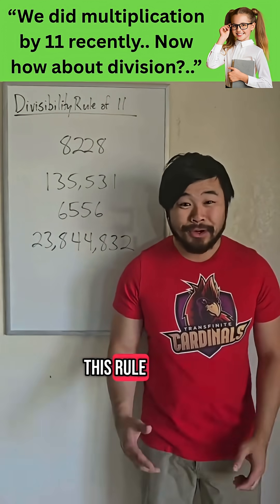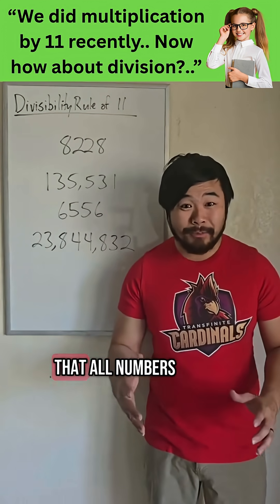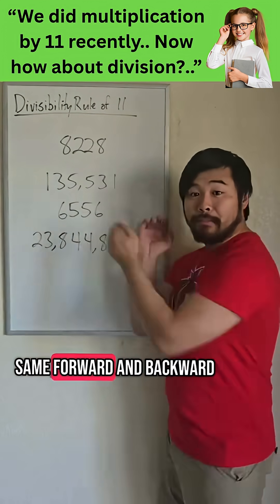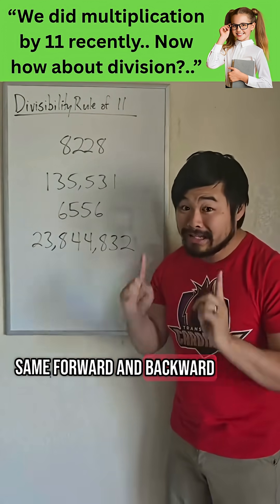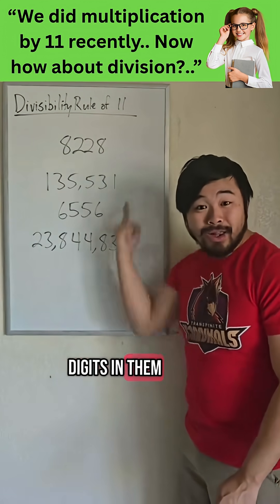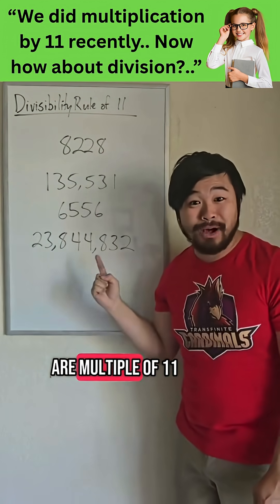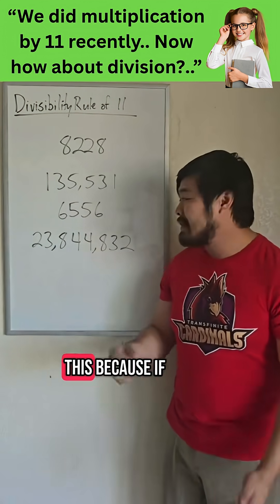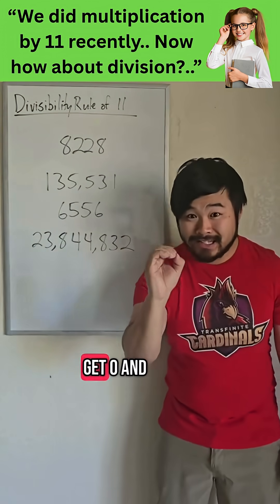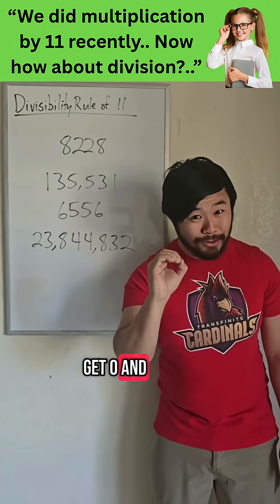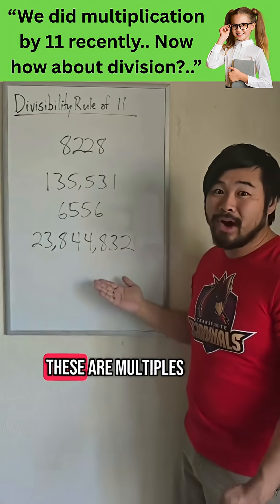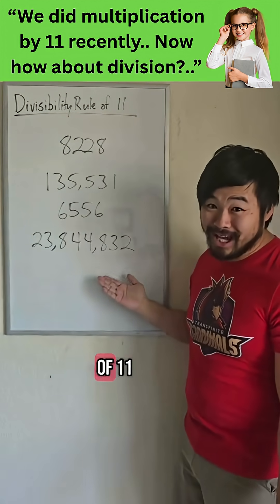Now, because of this rule, we can see that all numbers that are palindromes — meaning they can be read the same forward and backward — as long as they have an even number of digits in them, all of these are a multiple of 11. We know this because if we do the alternating sum, we would always get 0, and 0 counts as a multiple of 11. So all of these are multiples of 11.